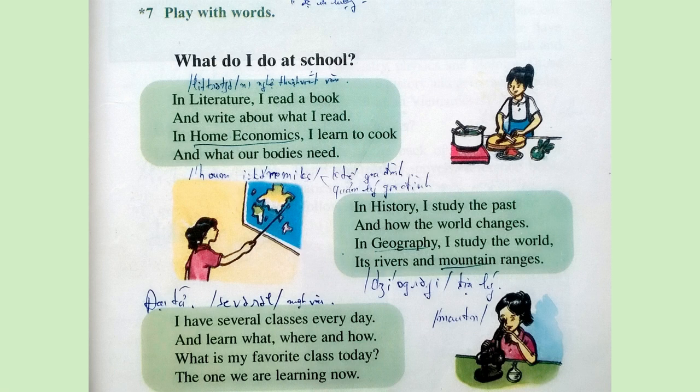Play with words. What do I do at school? In literature, I read a book and write about what I read. In home economics, I learn to cook and what our bodies need. In history, I study the past and how the world changes. In geography, I study the world, its rivers and mountain ranges. I have several classes every day and learn what, where, and how. What is my favorite class today? The one we are learning now.